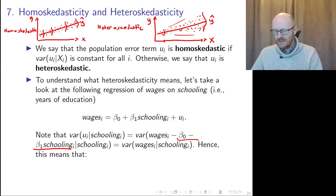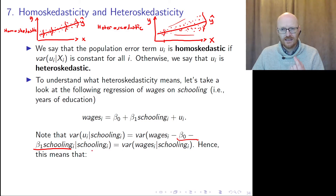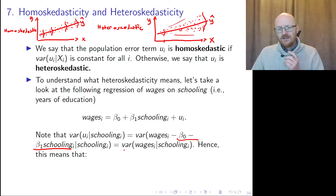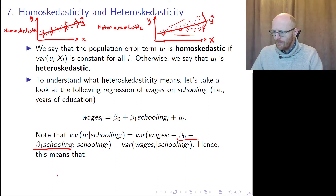The expected wages given the number of years of schooling is just the sample regression line. So the variance of the residuals given schooling is equal to the variance of wages given schooling.